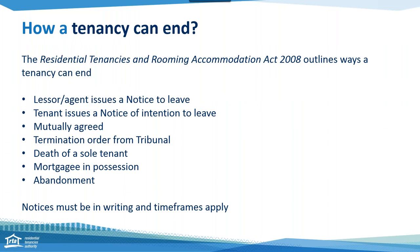What we're looking at here is how a tenancy can end. The Act outlines ways that the tenancy can end: a lessor or an agent can issue a notice to leave, and that can be with or without grounds; a tenant issues a notice of their intention to leave; mutually agreed — and we recommend this is in writing and signed by all parties; a termination order from the Tribunal; death of a sole tenant; mortgagee in possession — a notice issued by the owner's bank; and also abandonment. Remember all notices must be in writing and there are time frames for issuing notices.